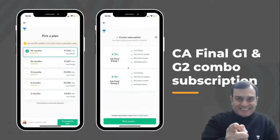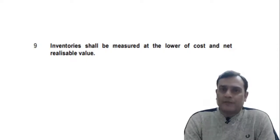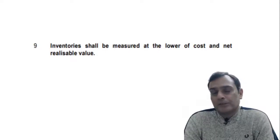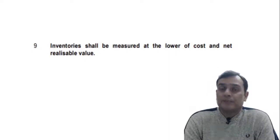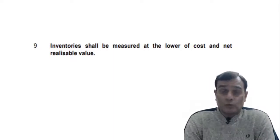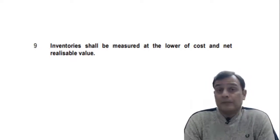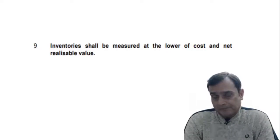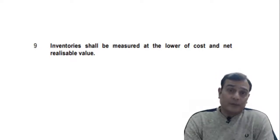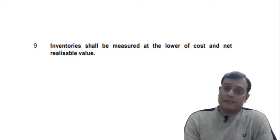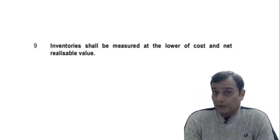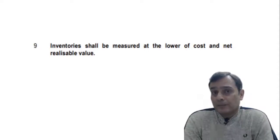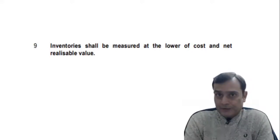The discussion on inventory valuation measurement is incomplete unless you read Para 9 and Para 32. Para 9 is talking in general about the inventory measurement principle. It very clearly states that inventories shall be measured at the lower of cost and NRV. When you look at the word 'inventories' in Para 9, it would include raw material, WIP, as well as finished goods. So apparently, reading Para 9 alone, it seems this principle is applicable to all three categories.